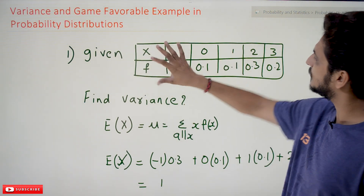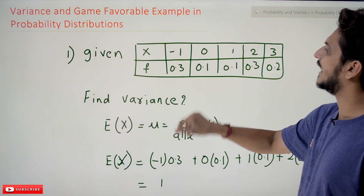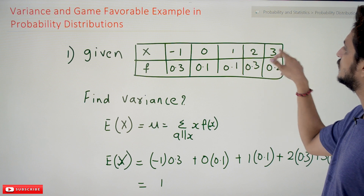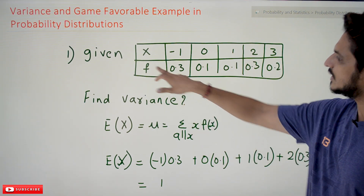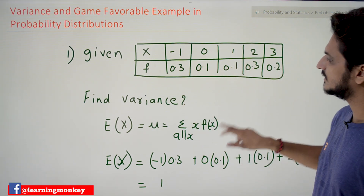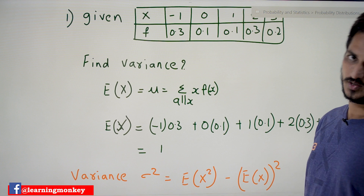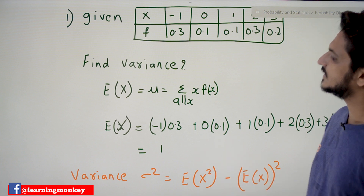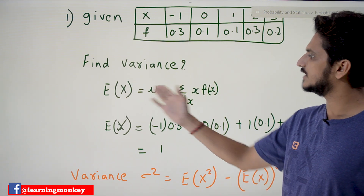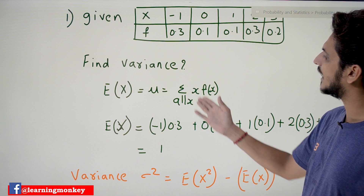Given this probability distribution: random variable X has values minus 1, 0, 1, 2, 3, and the corresponding probability values are provided. We need to find the variance. Before finding the variance, we need to find the expected value of X, that is mu, which equals sigma of all X times F(X).